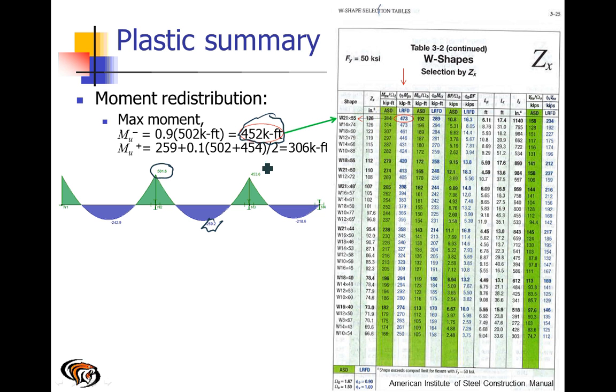If we enter the tables again, the design tables, the plastic moment column for LRFD, the lightest section is going to be one that has a moment capacity of 473 kip-feet, and that's a W21 by 55. So we didn't save any weight from the previous section, but we saved a few inches in the depth. The other section is W24 by 55.